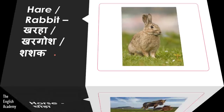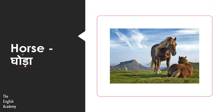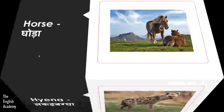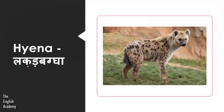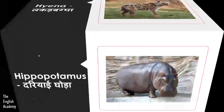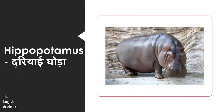The next animal is Ghoda, known as Horse. Then we have Lakadbugga, known as Hyena. The next animal is Dariyai Ghoda, known as Hippopotamus.